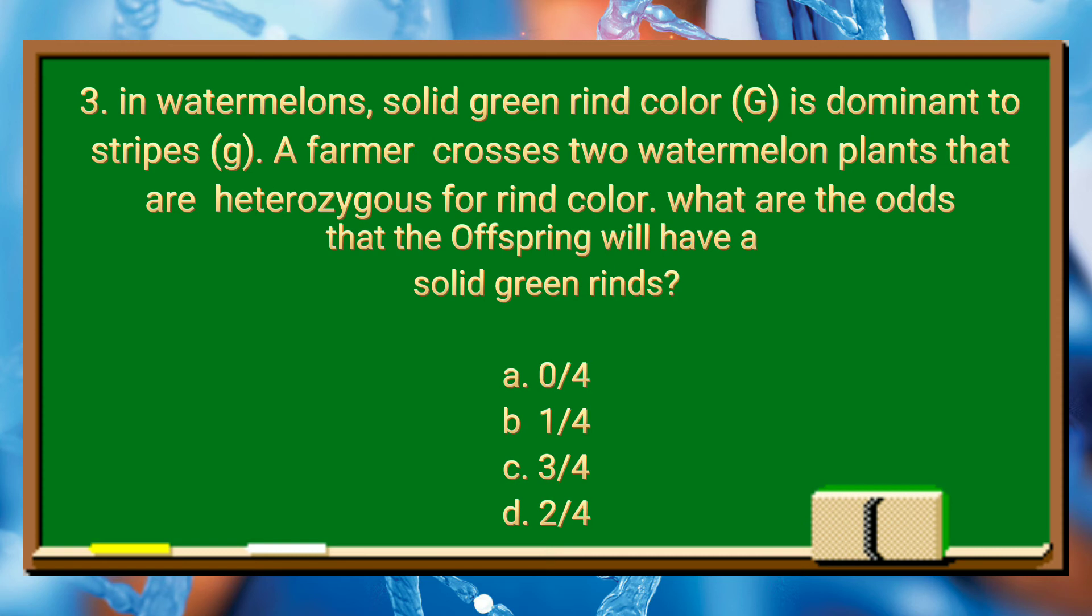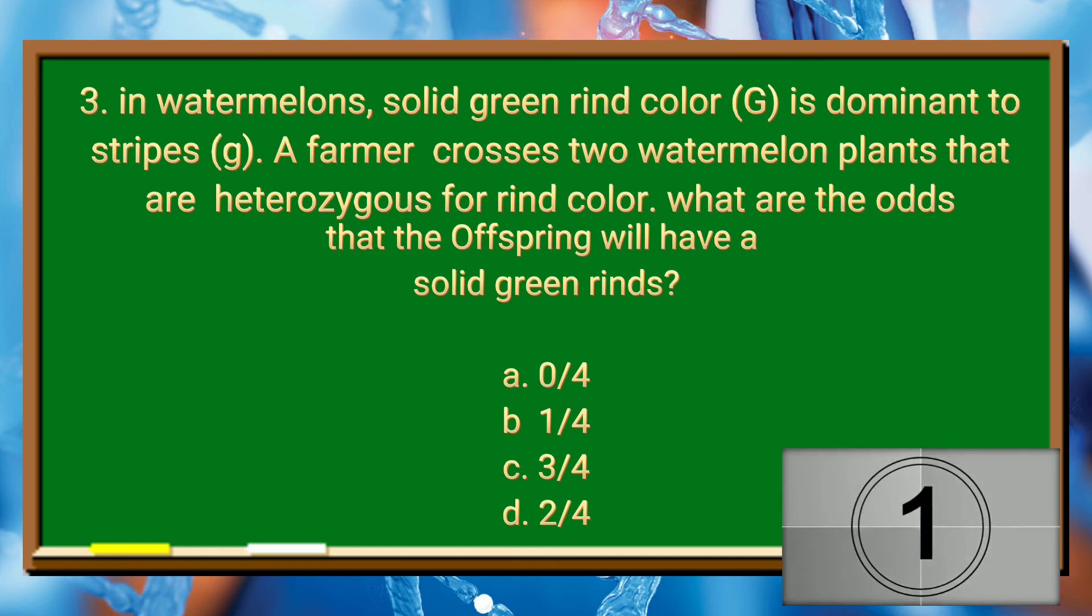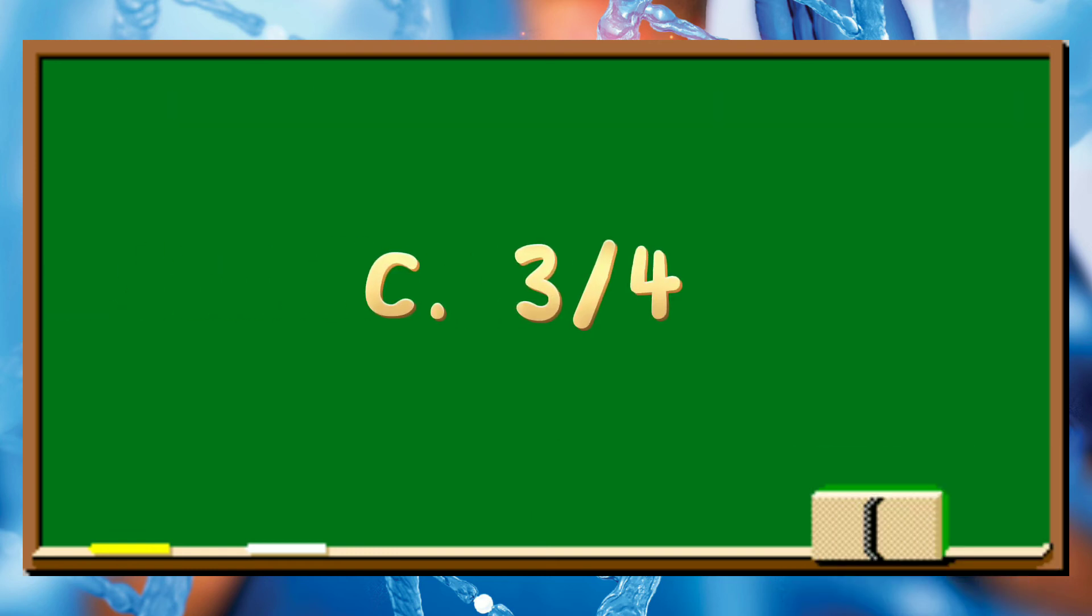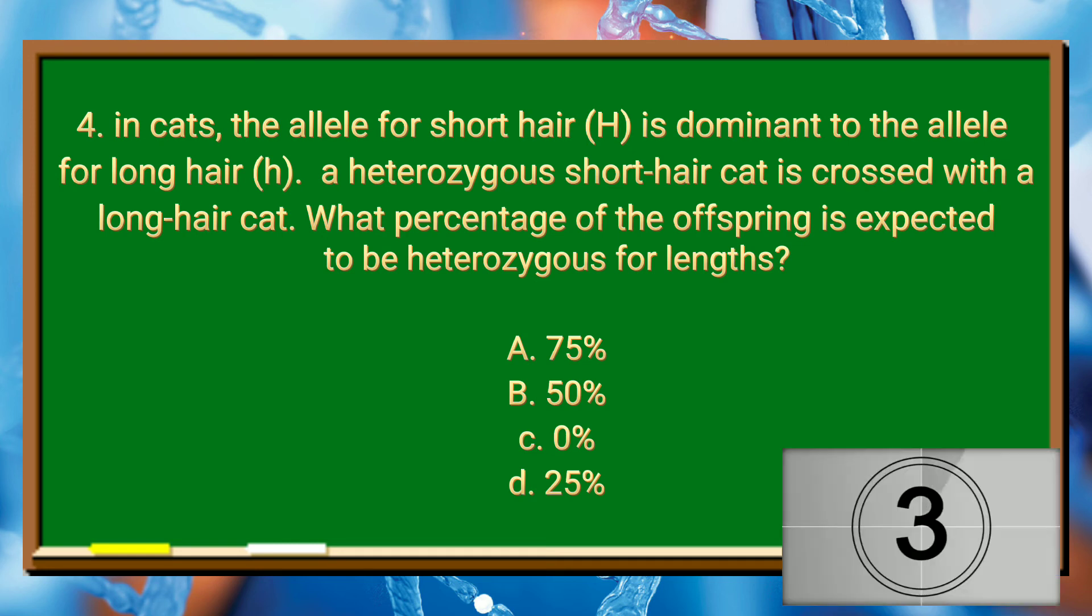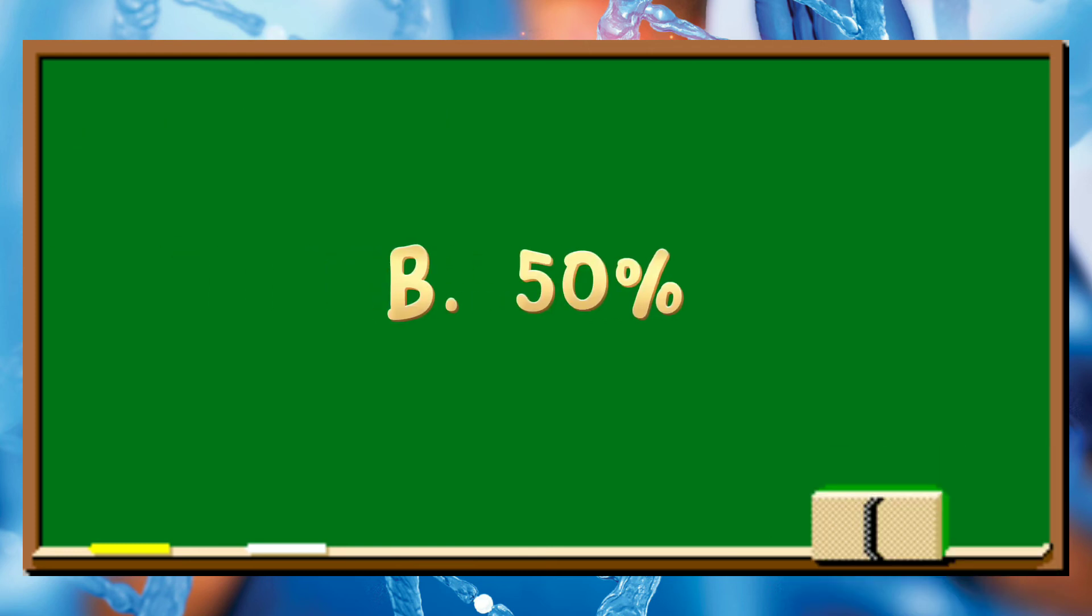In watermelons, solid green rind color is dominant to stripes. A farmer crosses two watermelon plants that are heterozygous for rind color. What are the odds that the offspring will have a solid green rind? 3 over 4. In cats, the allele for short hair is dominant to the allele for long hair. A heterozygous short hair cat is crossed with a long hair cat. What percentage of the offspring is expected to be heterozygous for hair length? 50%.